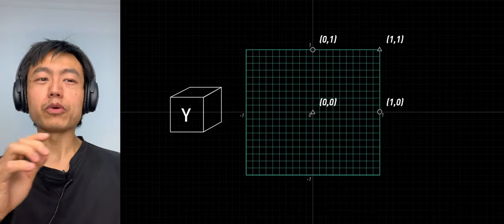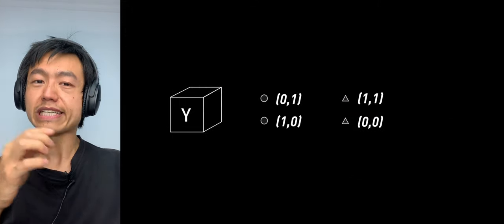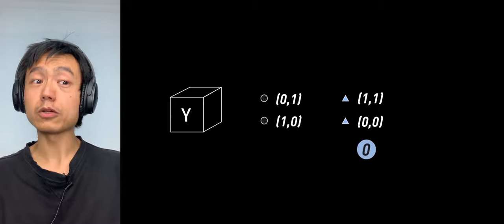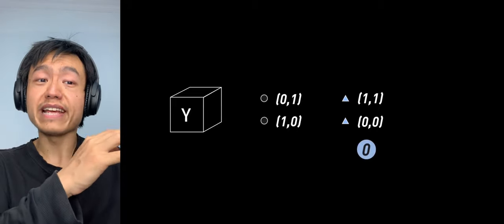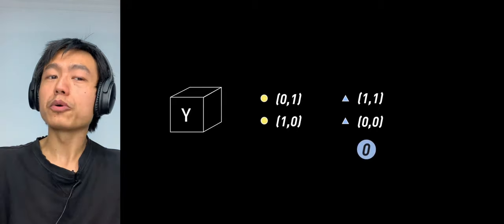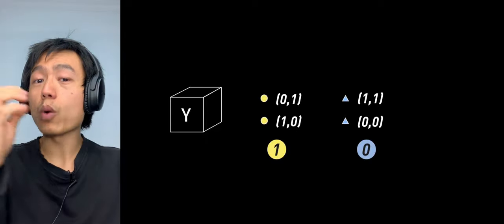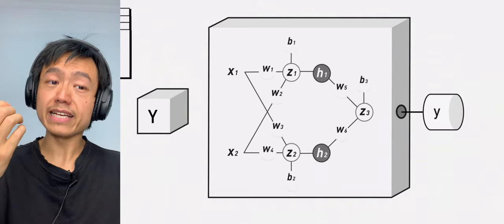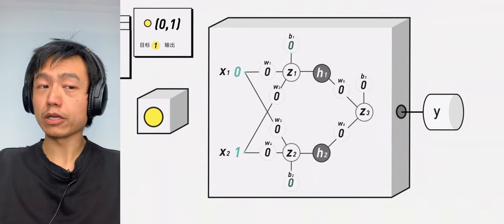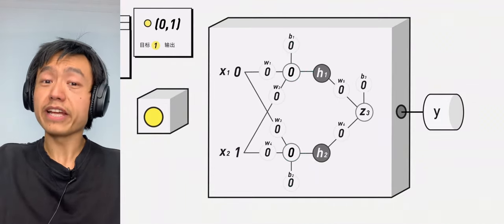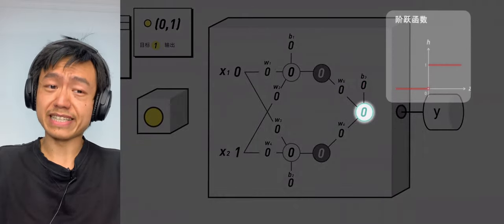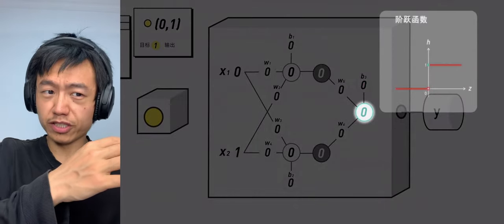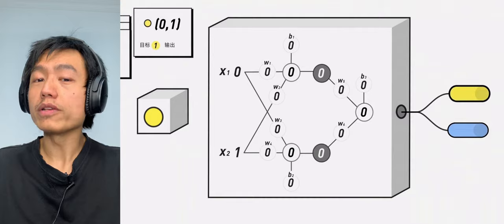For example, we set the output target of (0,0) and (1,1) to 0, and put them into the same category. Set the output target of (0,1) and (1,0) to 1, and classify them into another category. In the case where all the parameters are 0, no matter what the input is, this z is 0. After the step function, the output of all points is 1.